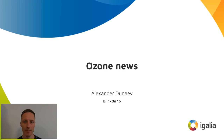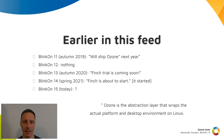Hi, I'm Alex from Ingalia. Let me tell you some news about Ozone. This has been a long project already, so let me start with a brief retrospective. Ozone is the abstraction layer that wraps the actual platform and desktop environment on Linux. It was first invented for Chrome OS, and we work on making the desktop Chrome on Linux using Ozone to improve support for numerous variations of Linux that exist in the world.